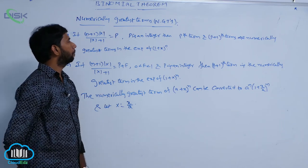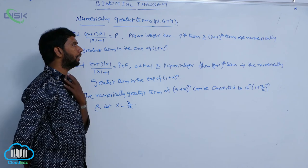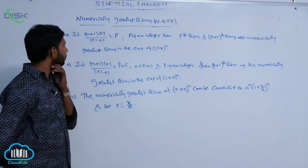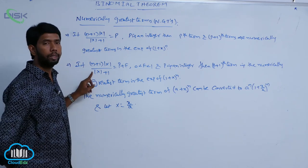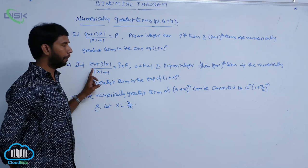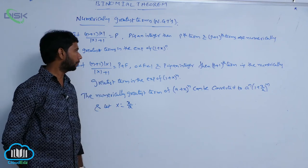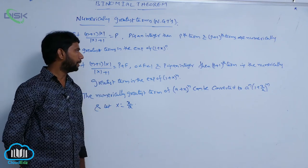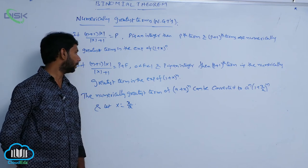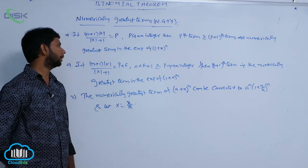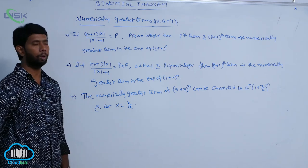Therefore, the P-th term and (P+1)-th term are both numerically greatest terms. In the second case, if (N+1) × |X| / (|X| + 1) equals P + F, where 0 < F < 1 and P is an integer, then the (P+1)-th term is the numerically greatest term in the expansion of (1 + X)^N.